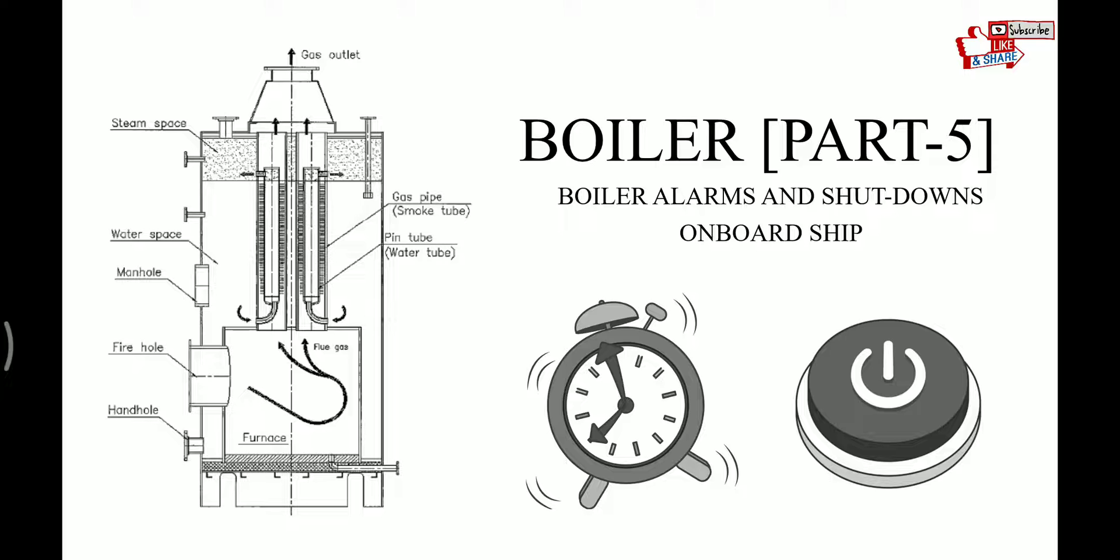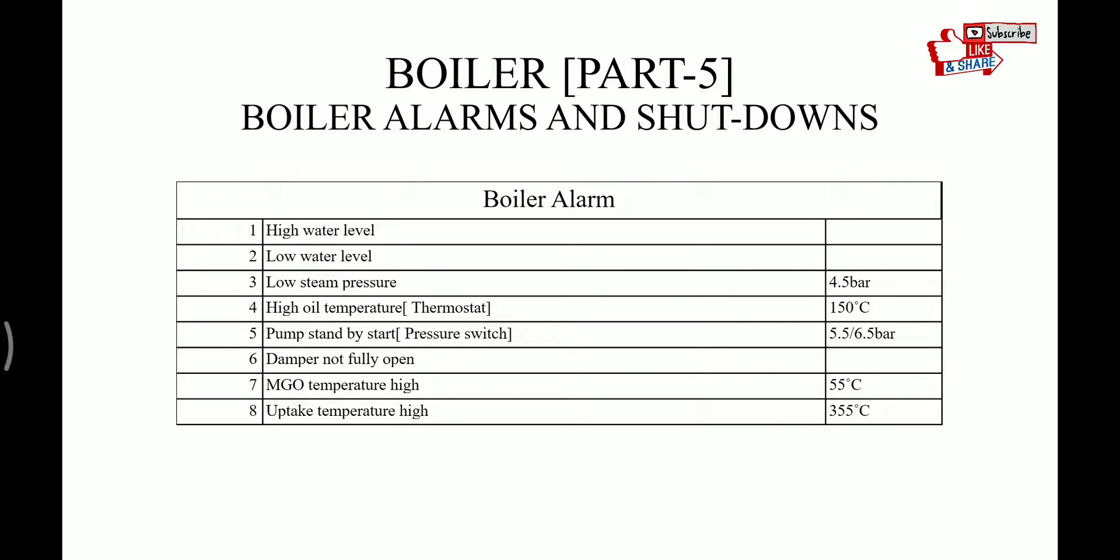I'll request all my friends to help me with your valuable comments below. Let's begin with the alarms on the boiler: high water level, low water level, low steam pressure, high oil temperature from the thermostat, pump standby start from the pressure switch, air damper not fully open, MGO temperature high, and uptake temperature high. The limit values can be seen from the slides.